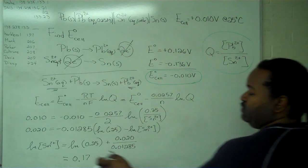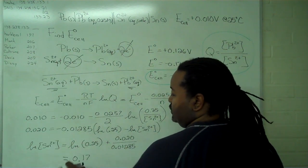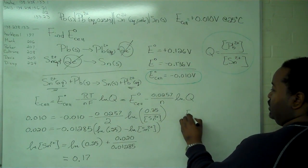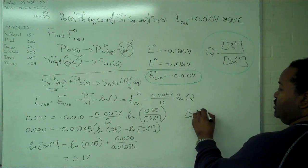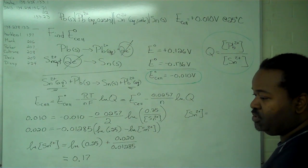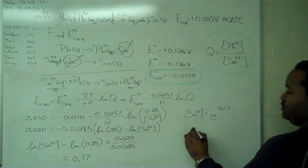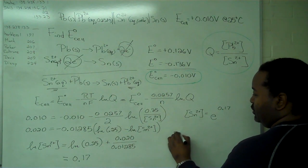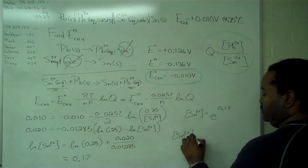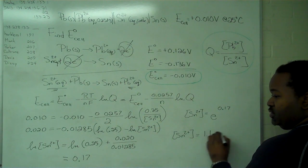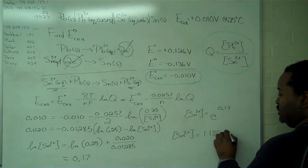To solve for the concentration, we take e raised to both sides. This gives us the concentration of tin equals e to the 0.17. Our final answer is that the tin concentration is 1.186 molar.